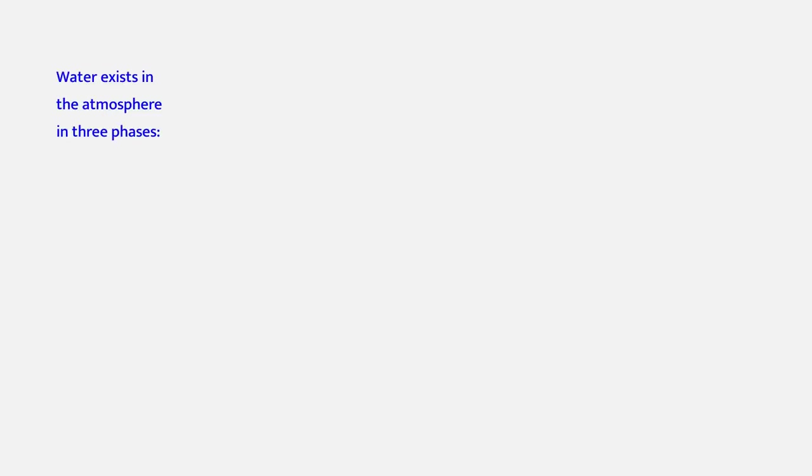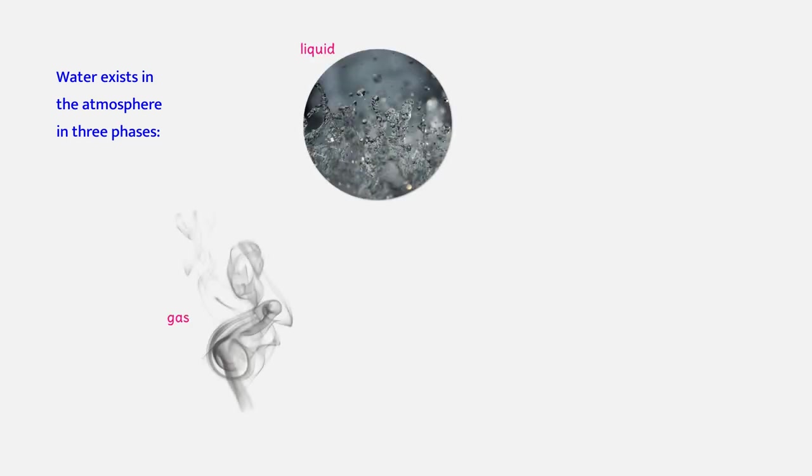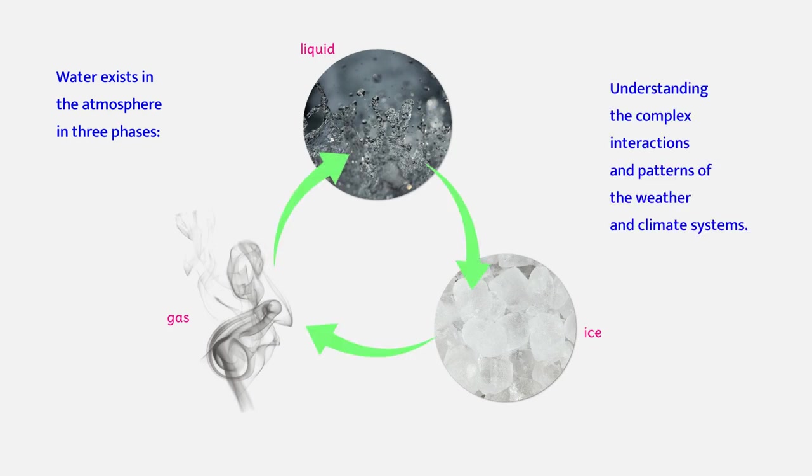Water exists in the atmosphere in three phases: gas, liquid, and ice. It is the most interesting and challenging parameter for understanding the complex interactions and patterns of the weather and climate systems.